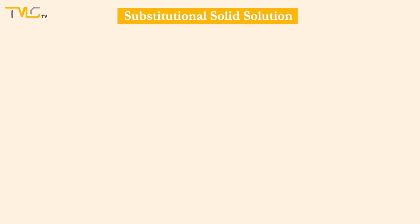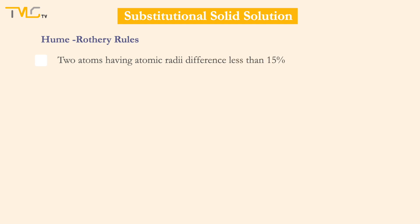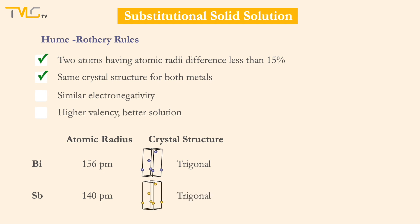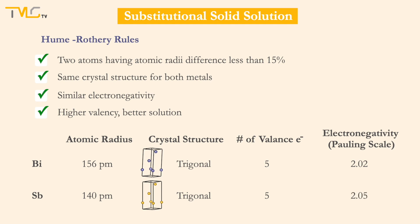In order to determine whether a substitutional solid solution would be formed, we can use Hume-Rothery rules. These rules require two atom types to have a difference less than 15% in atomic radii, both elements to have the same crystal structure, similar electronegativities, and a high number of valence electrons. The bismuth-antimony couple is a good example, as they are completely soluble in each other. Both elements have trigonal crystal structure, their atomic radii difference is less than 15%, they both have five valence electrons and similar electronegativities, which enables a wide range of concentration for these two elements to form a substitutional solid solution.